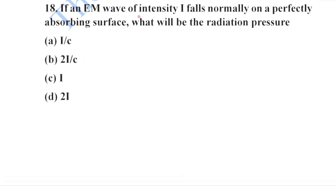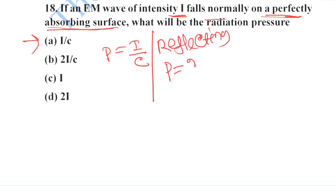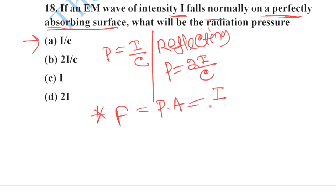Next: if an electromagnetic wave of intensity I falls normally on a perfectly absorbing surface, what will be the radiation pressure? For a perfectly absorbing surface, radiation pressure is I/c. Option A is your correct option. For a fully reflecting surface, radiation pressure is 2I/c. Also remember, since pressure is force per unit area, force = (I/c) × A. Since intensity = power/area, the area cancels and force = P/c.